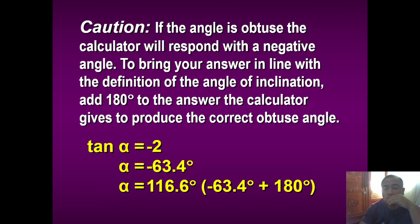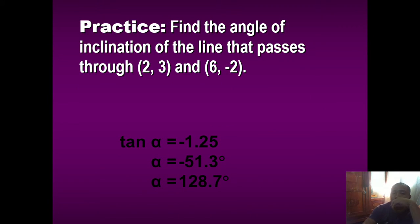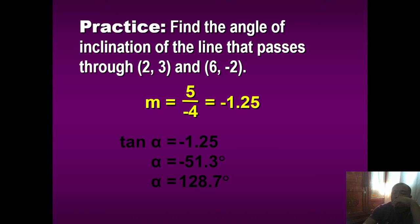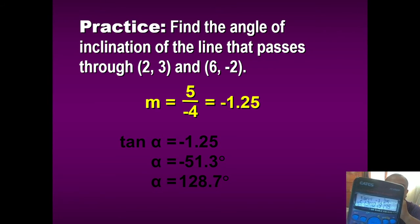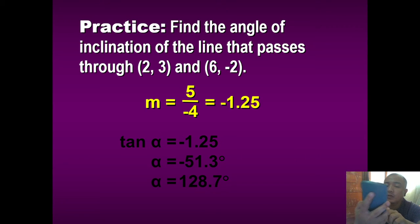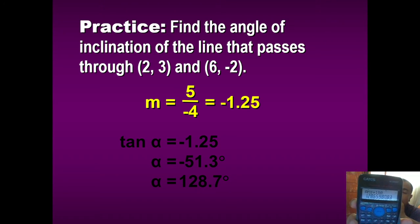Practice: find the angle of inclination of the line that passes through (2, 3) and (6, -2). First, solve the slope: (3 - (-2)) / (2 - 6) = 5 / -4 = -1.25. To solve the angle of inclination, press shift tangent(-1.25), which equals -51.3 degrees. Since it is negative, add 180 degrees: -51.3 + 180 = 128.7 degrees. So 128.7 degrees is the angle of inclination of the line passing through (2, 3) and (6, -2).